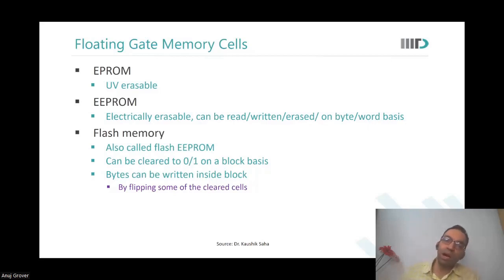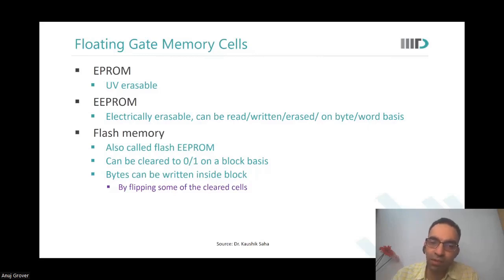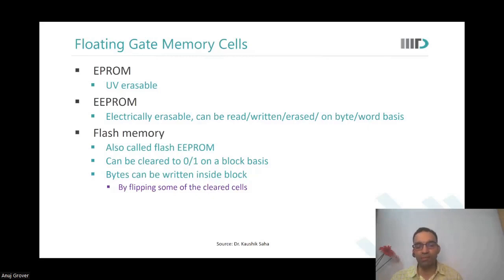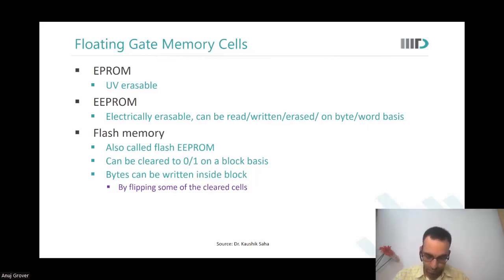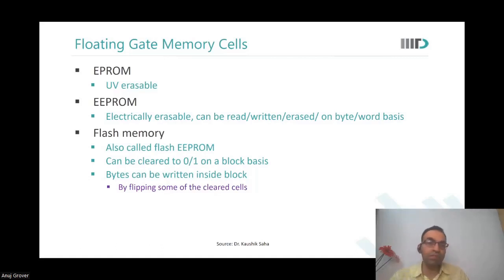Flash memories are again EEPROMs, but they enable reset or set of the entire array in one go — that is why they are called flash. The entire array can be programmed to 0 or 1, and you can also write location by location. In EPROM you are changing a single bit or a bunch of bits, whereas flash is much faster.